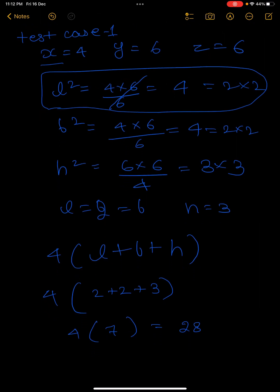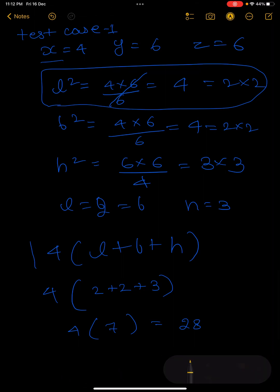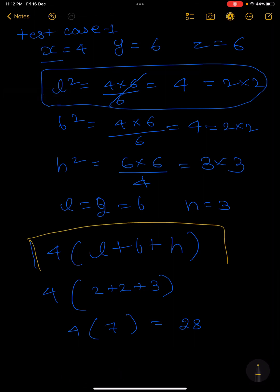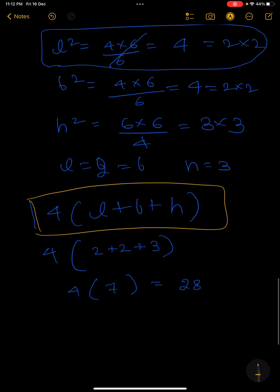Then the sum of all 12 edges equals 4 times (length plus breadth plus height). This is the formula for the sum of all 12 edges. Simply putting the values, you will find 28.